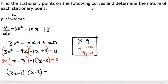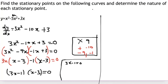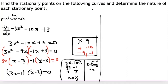I equate each bracket to zero. From 3x − 1 = 0: carrying 1 over gives 3x = 1, then dividing by 3 gives x = 1/3. From x − 3 = 0: carrying 3 over gives x = 3. So the two x-values for the stationary points are x = 1/3 and x = 3.